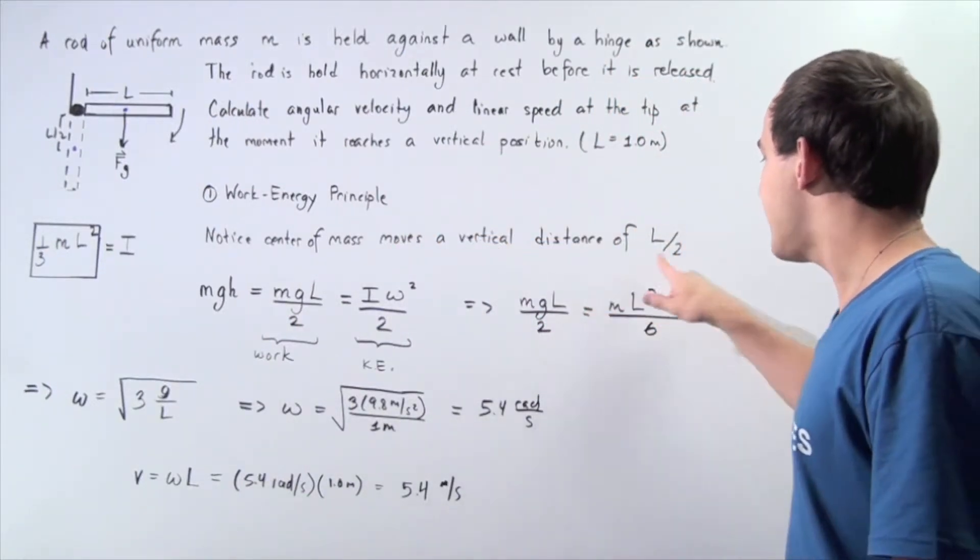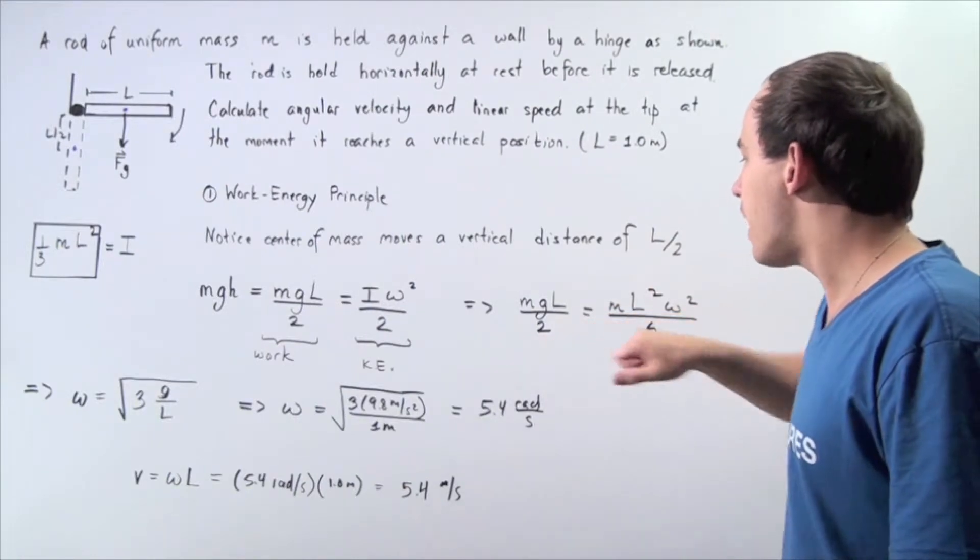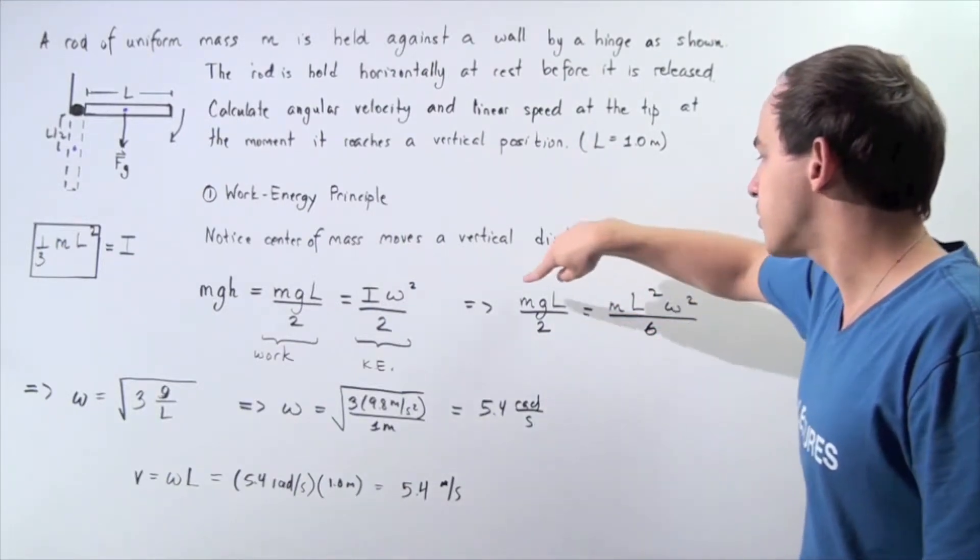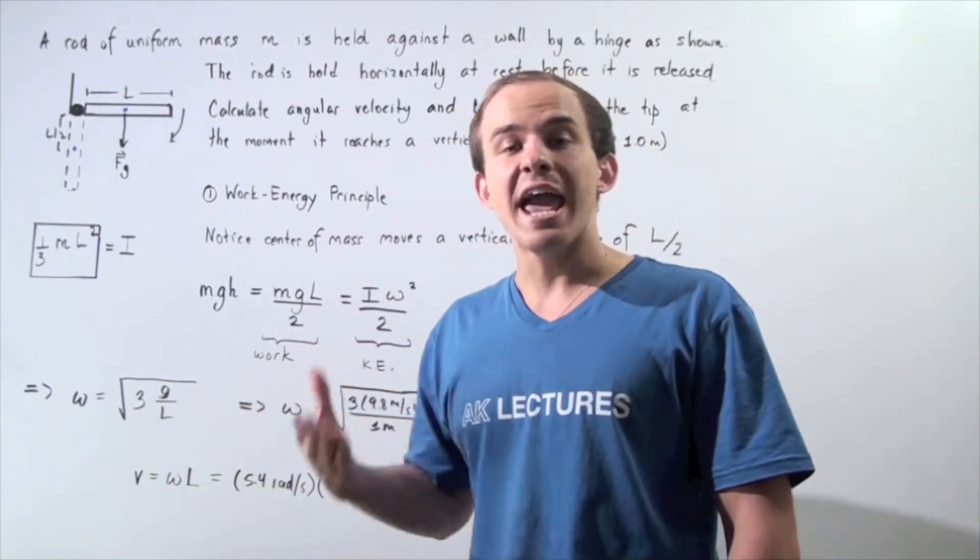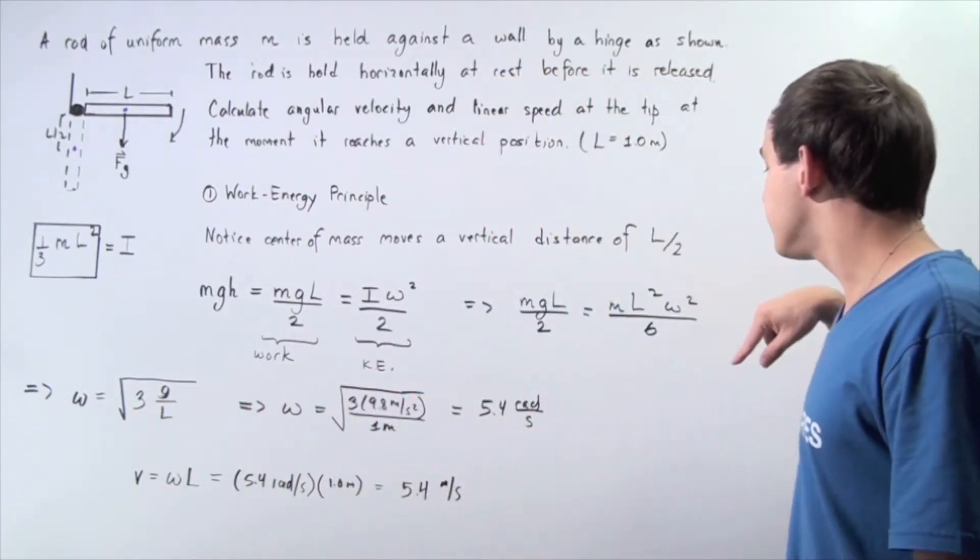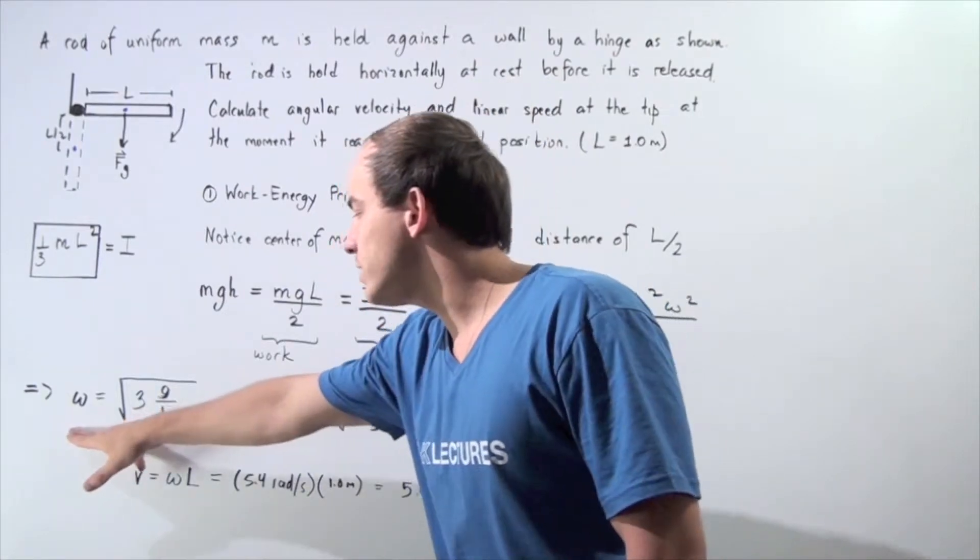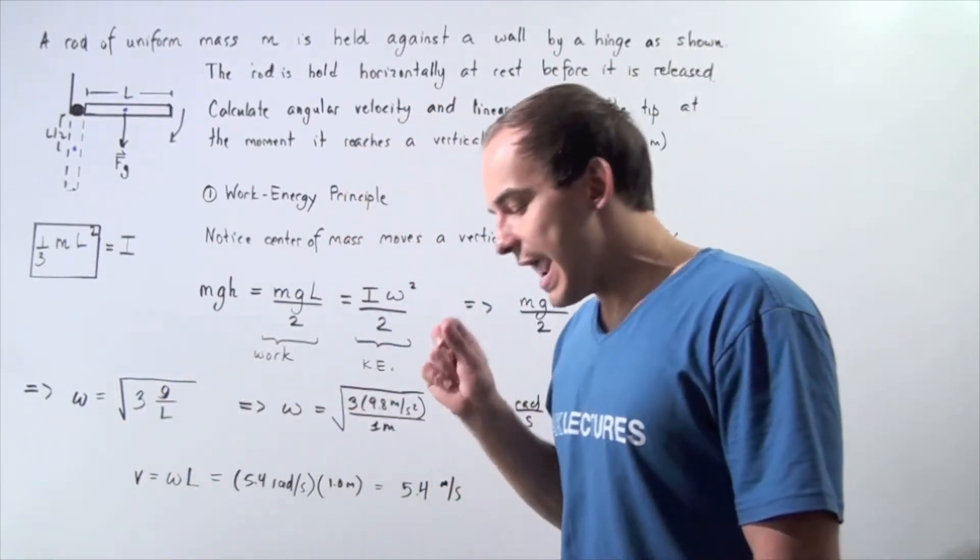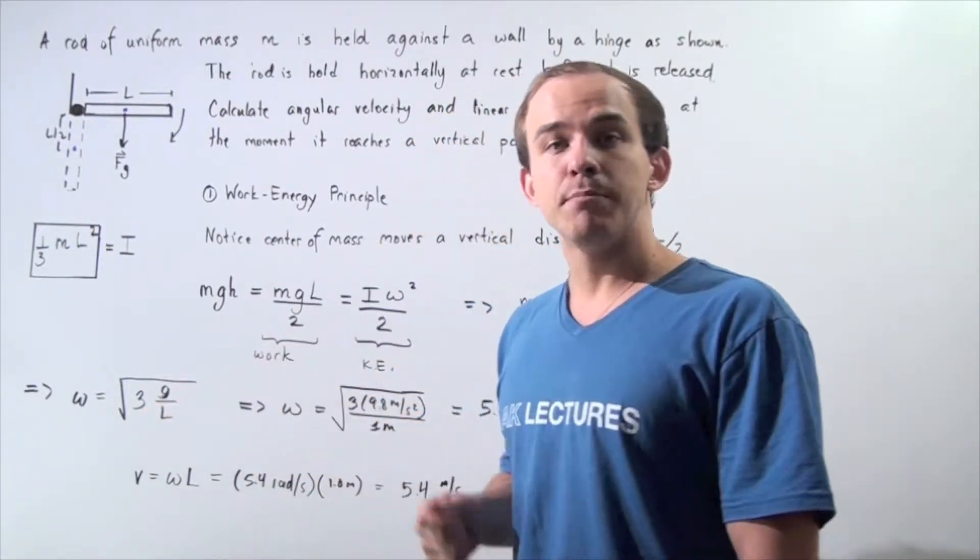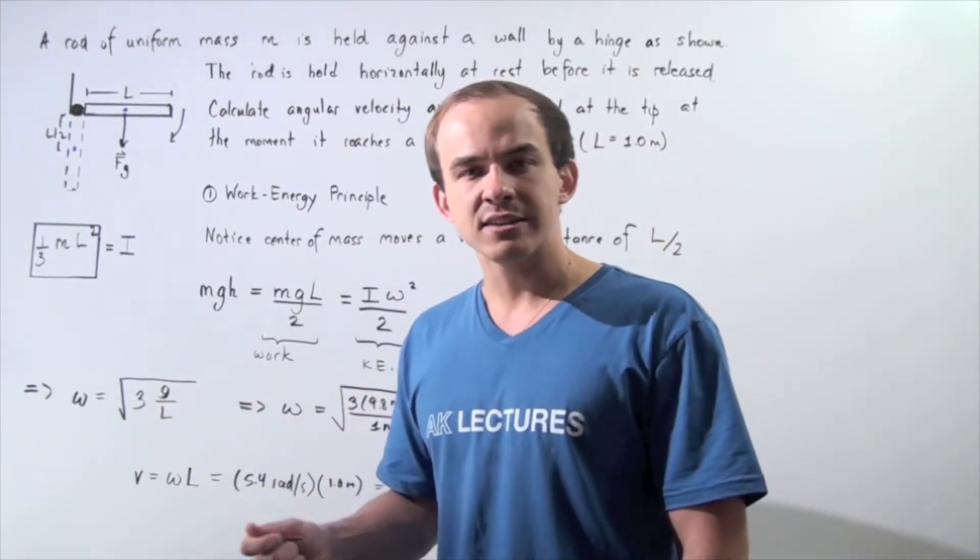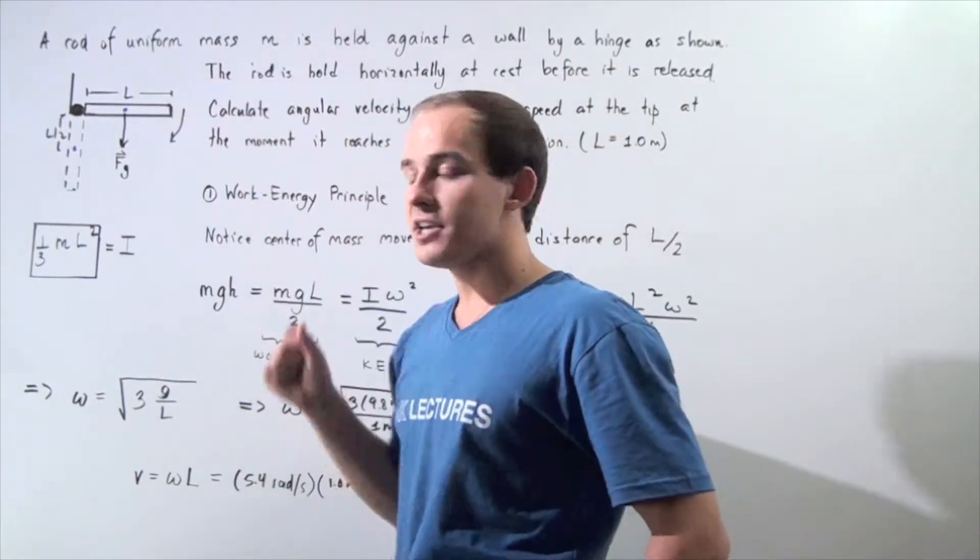Notice the L's cancel, so we're left with only one L. Notice the M's cancel, and the 2 on the bottom cancels. This becomes a 3 when we move the 6 over. We want to solve for the angular velocity. The angular velocity is squared, so we have to take the radical of both sides. The angular velocity of the object is equal to the square root of 3 multiplied by G, our gravitational constant, divided by L, our distance of the entire rod.